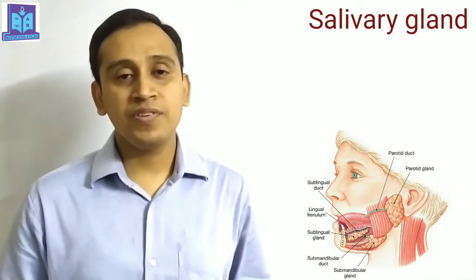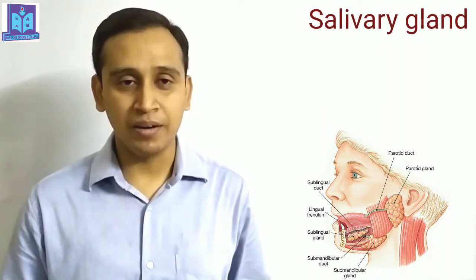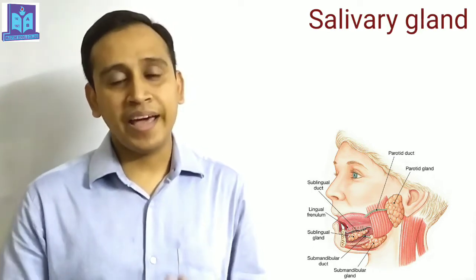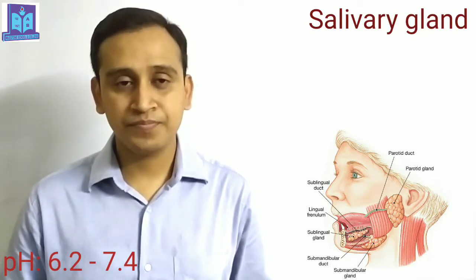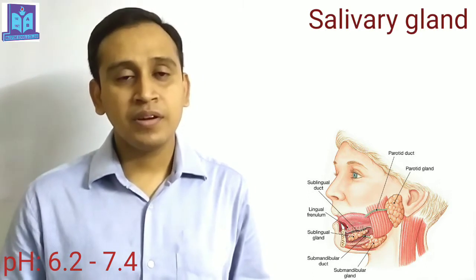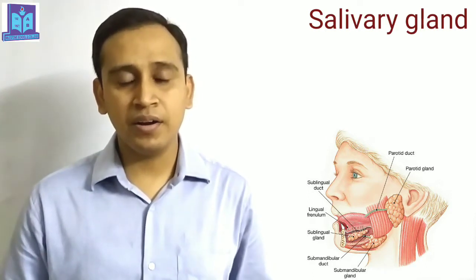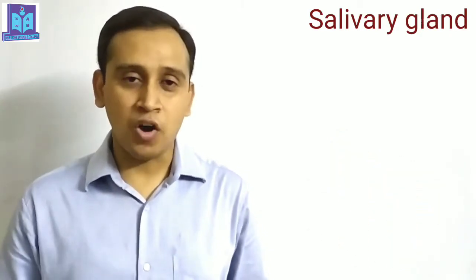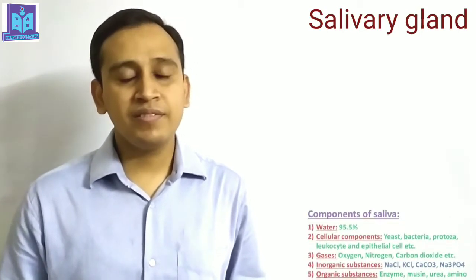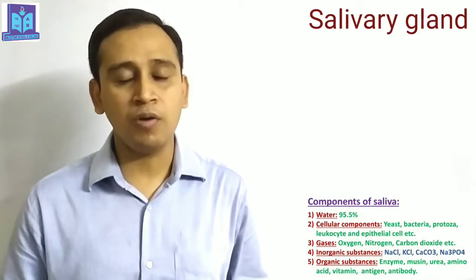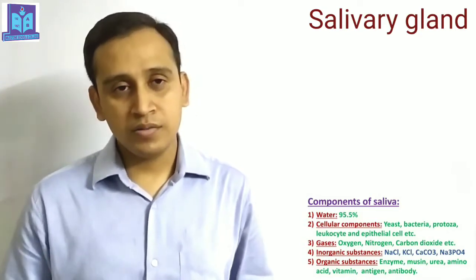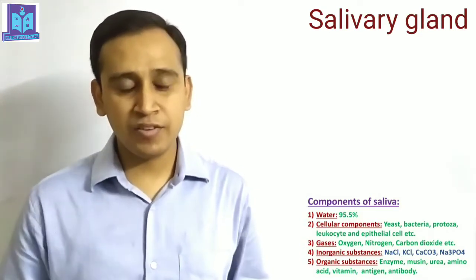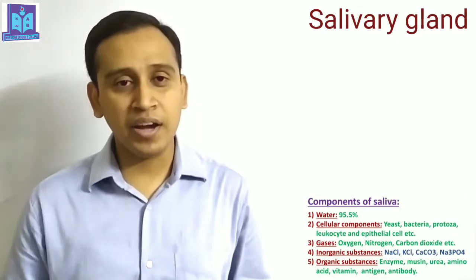The secretion of salivary gland is called saliva. Saliva is acidic in nature. The pH of saliva is 6.2 to 7.4. A healthy person can secrete 1,200 ml to 1,500 ml of saliva per day. The main component of saliva is water — 95.5% of saliva is water. Besides water, saliva also contains some cellular components, gaseous components, and organic and inorganic components.